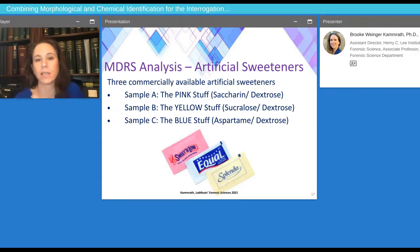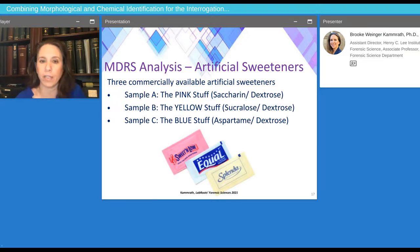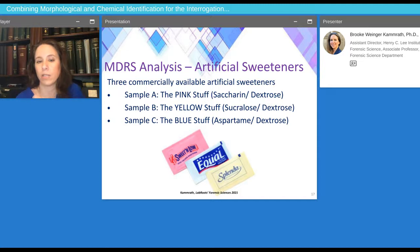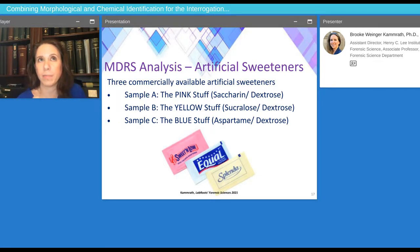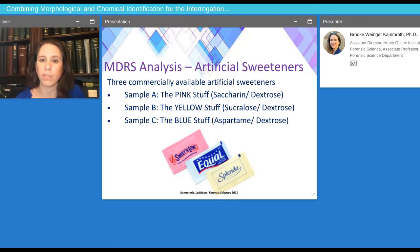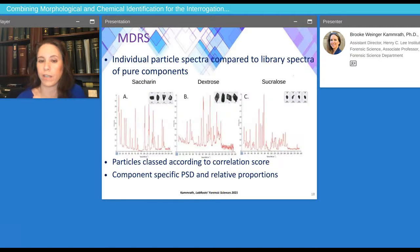We looked at three very commonly available artificial sweeteners — to protect proprietary information, they're called the pink stuff, the yellow stuff, and the blue stuff. All of these artificial sweeteners contain a very small or trace amount of a sweetening agent: saccharin in the pink stuff, sucralose in the yellow stuff, and aspartame in the blue stuff. They all have a bulking agent, which is dextrose, and this usually consists of anywhere from 95 to 99% of the whole sample. Therefore, when you try to analyze these with a bulk analysis, you're only going to get the dextrose.